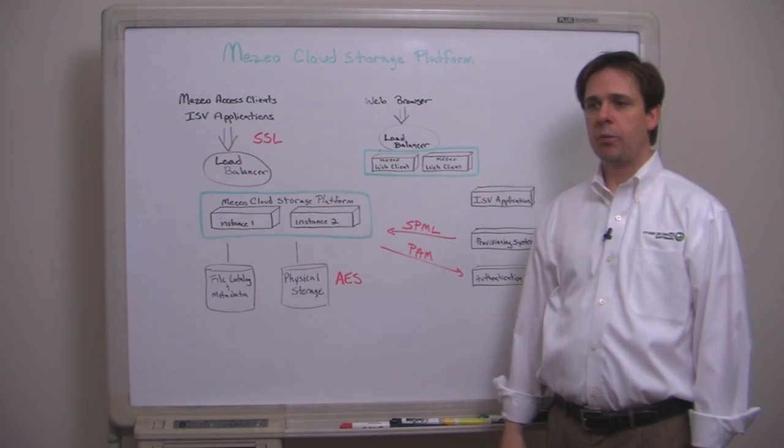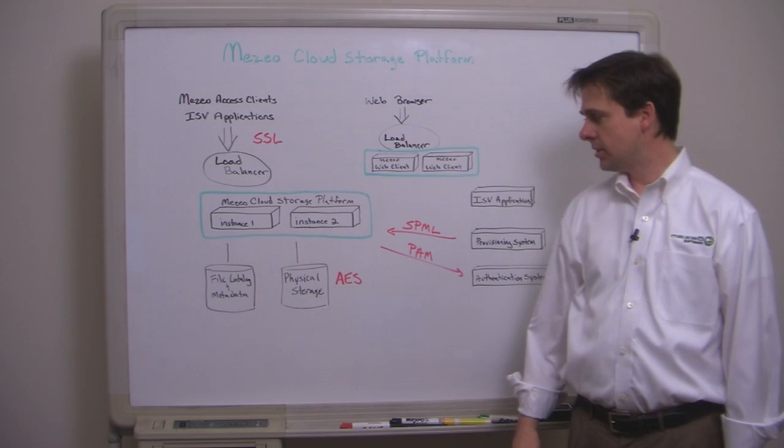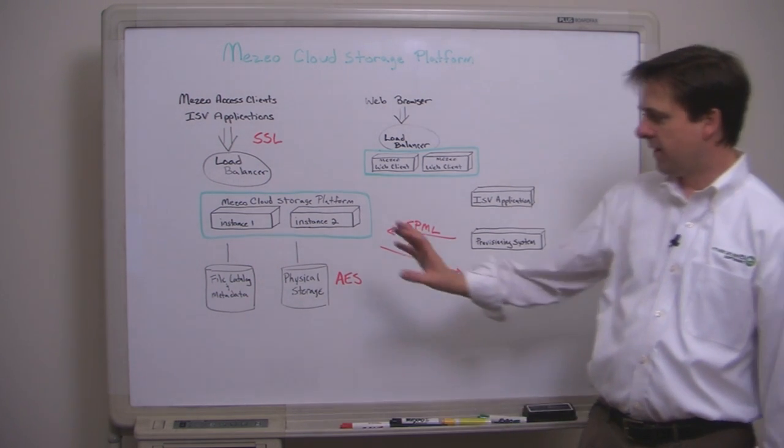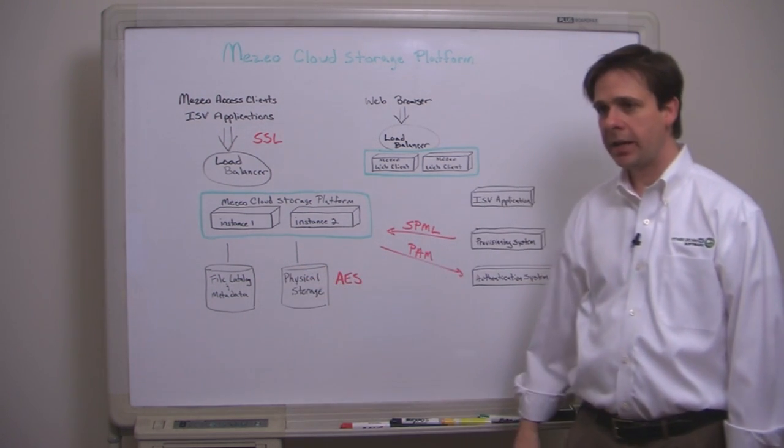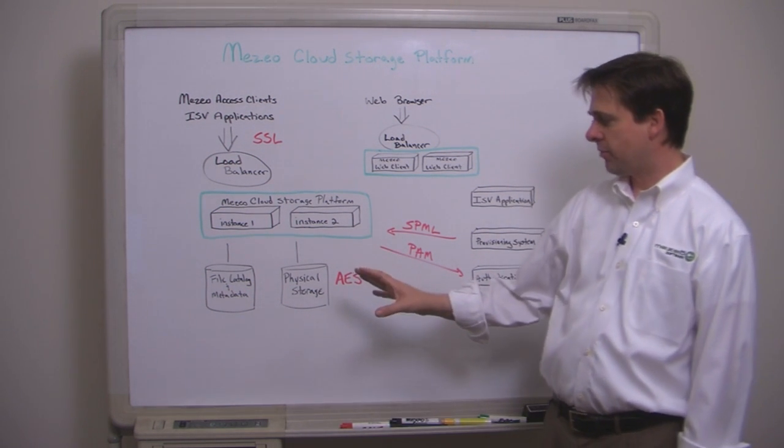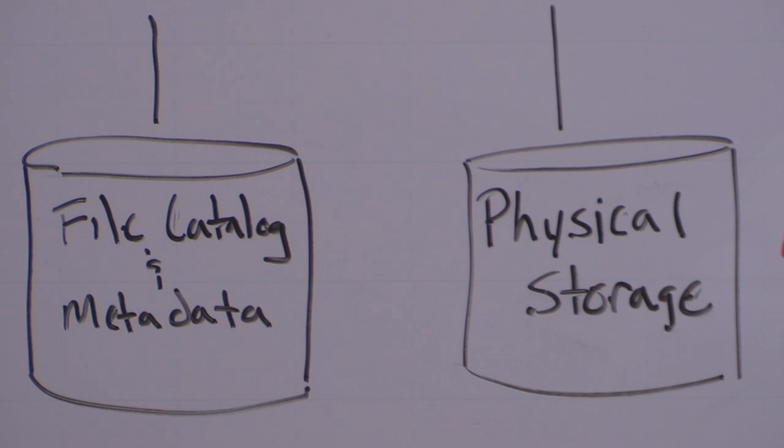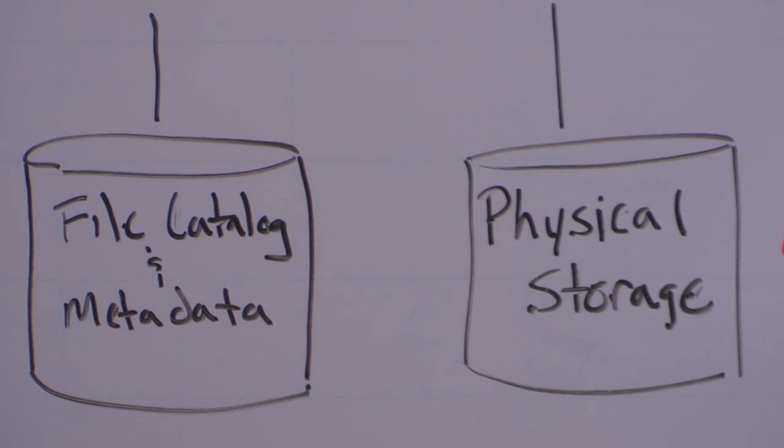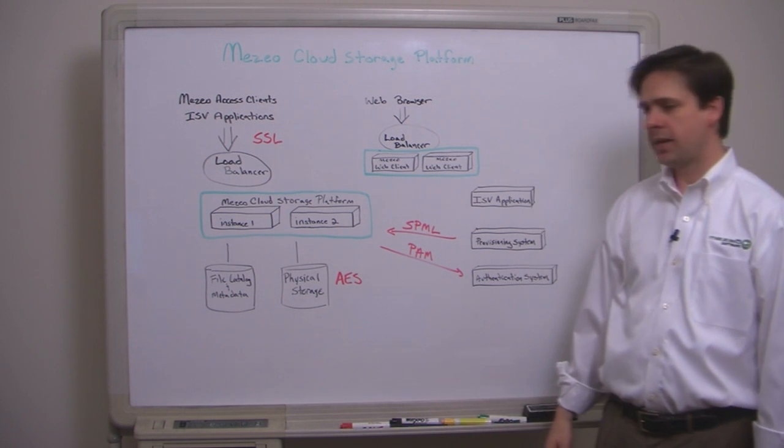Our file catalog and metadata repository are built on top of EnterpriseDB. And having this separate from the physical storage means that all activity to the server can be serviced quickly without touching the physical storage except when file data is actually needed.